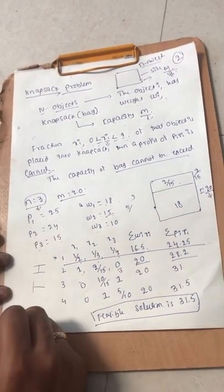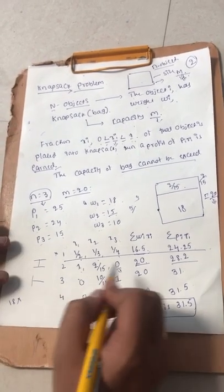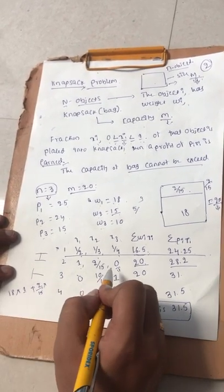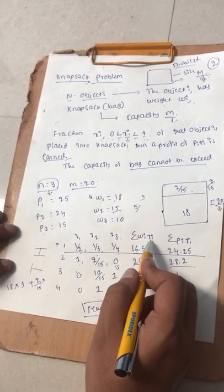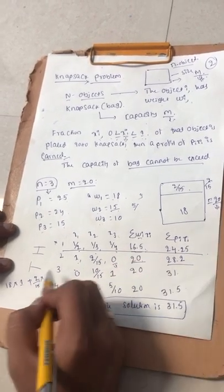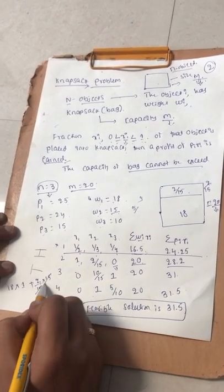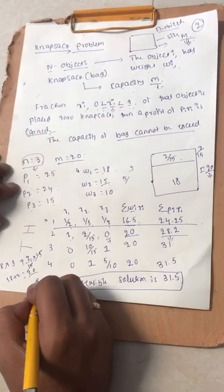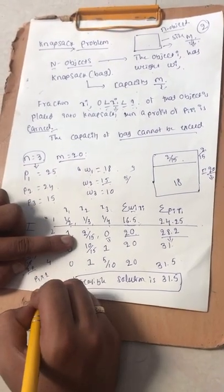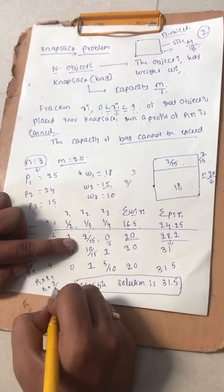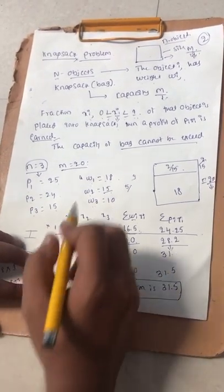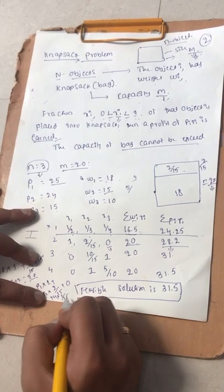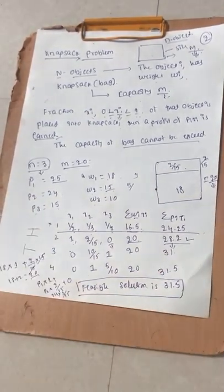To calculate w_i times x_i: w1 times x1 = 18 times 1, plus w2 times x2 = 15 times (2/15). The 15s cancel and we get 18 + 2 = 20. Similarly for profit: p1 times x1 = 25 times 1, plus p2 times x2 = 24 times (2/15). This gives 25 + 3.2 = 28.2. So the profit for this subset is 28.2.